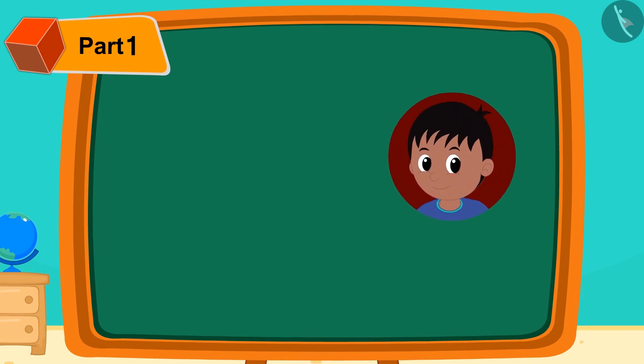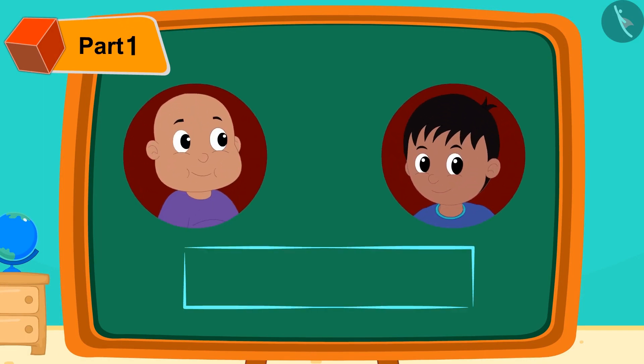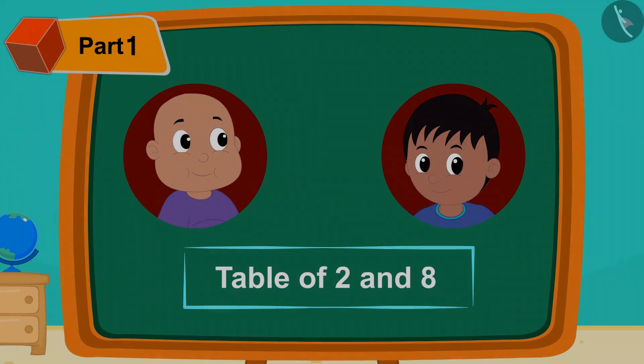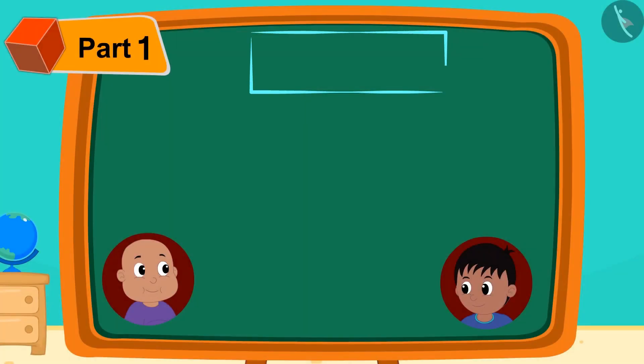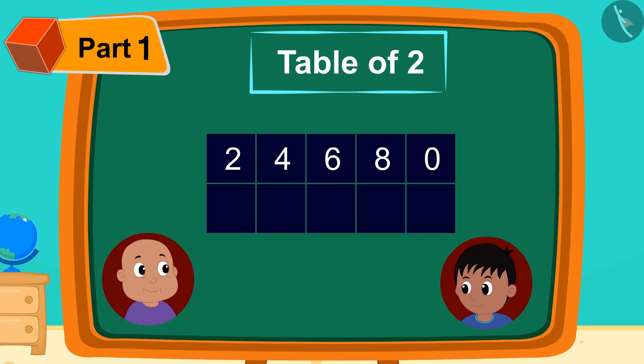First, Raju is teaching Bablu the easy way to memorize the table of 2 and 8. Raju is first referring to 2's table. He wrote these patterns in a table: 2, 4, 6, 8, 0 in two lines.